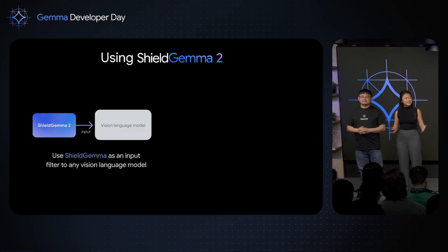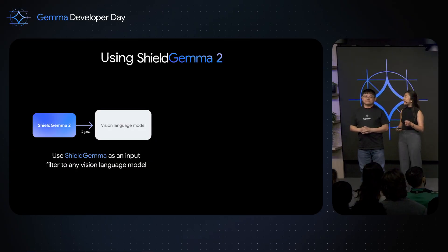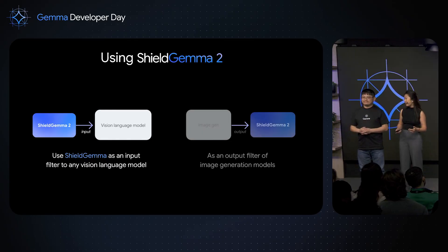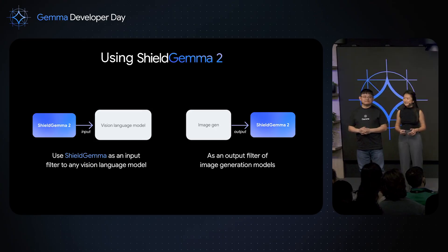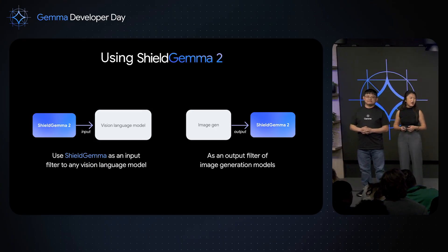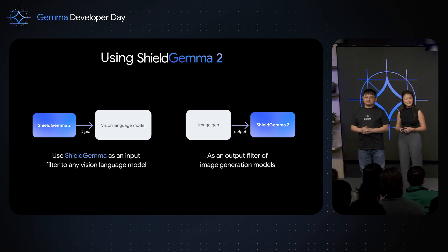So where can it actually be used? Shield Gemma 2 can be used as an input filter to any vision language model like Gemma 3, or as an output filter of any image generation system. We specifically built it for this dual use purpose to accommodate not just the creativity of developers but all the downstream use cases that come up.